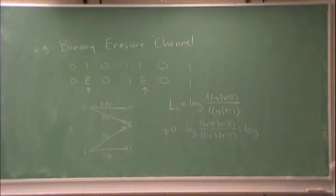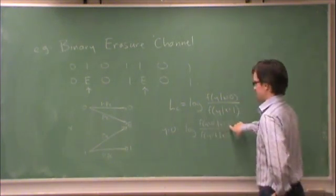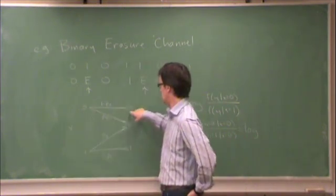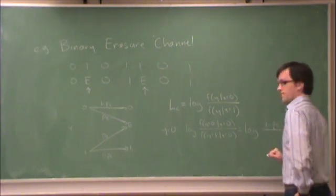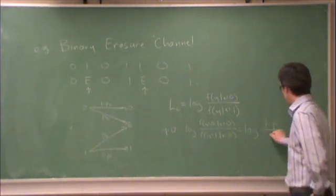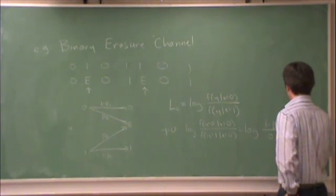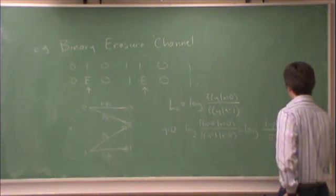The numerator is probably y is 0 given that x is 0, 1 minus PE. And the denominator? The denominator is 0. So what is this? This is log of infinity, which is infinity.